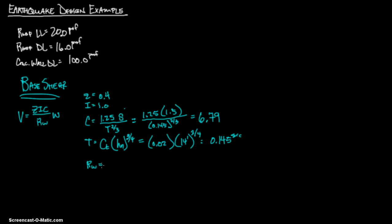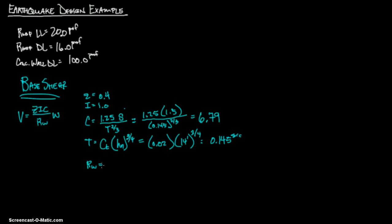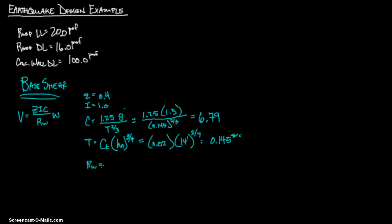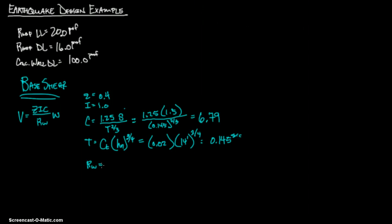It's likely a bearing wall system. It's not a light frame — that would be wood type. Shear walls, concrete — that probably fits best. It's not braced frames carrying gravity loads since we don't really have bracing. So I would use number 2A, which gives Rw equals 6.